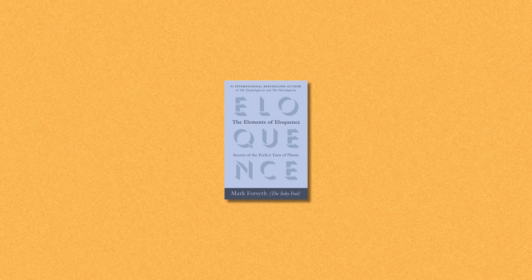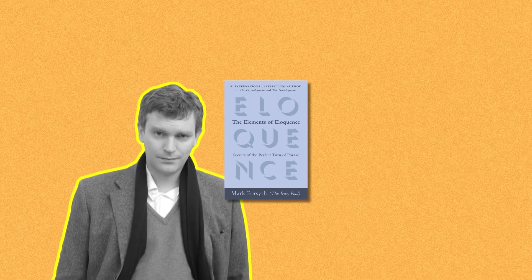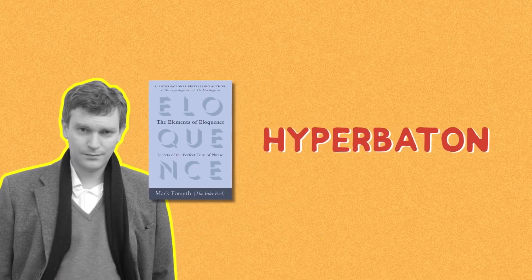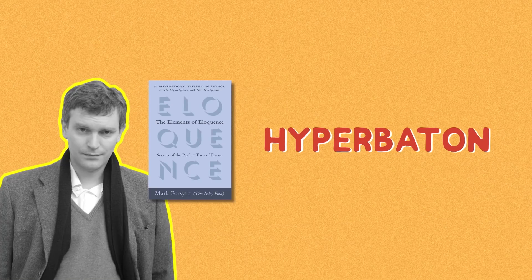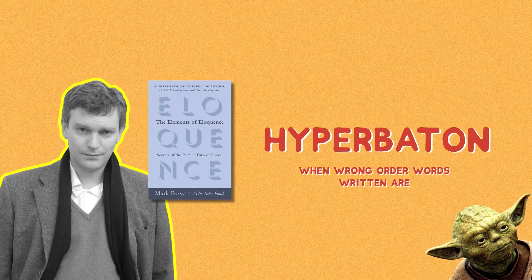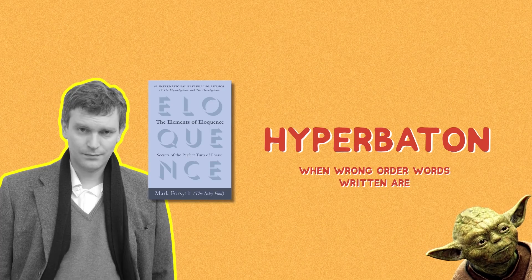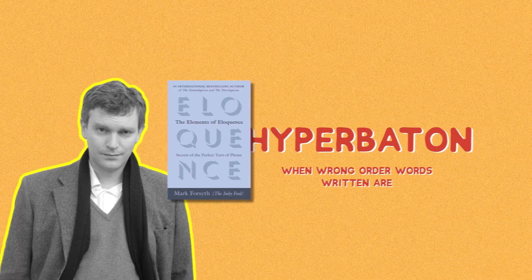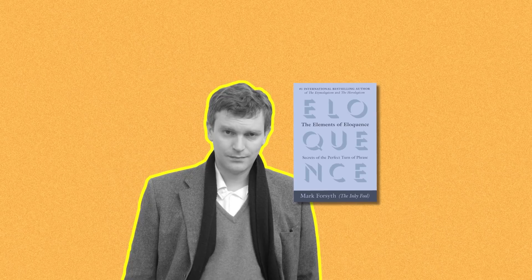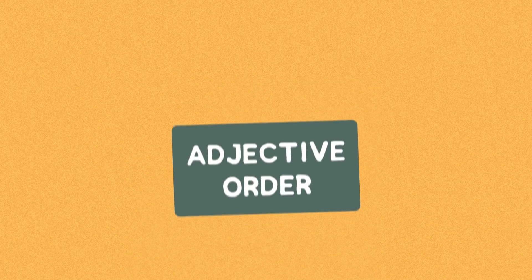In his book The Elements of Eloquence, linguist Mark Forsyth mentions this rule in a chapter on hyperbiton — the technical name for when words are written in the wrong order. He also talks about another subconscious rule that many are mind blown to find that they unknowingly do, which is the rule of adjective order.